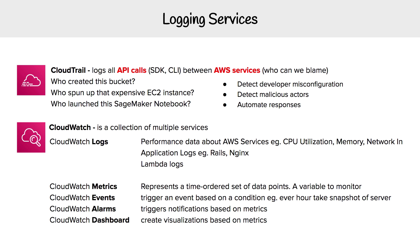Hey, this is Andrew Brown from ExamPro. We are looking at two logging services here: CloudTrail and CloudWatch. Starting with CloudTrail, it logs all API calls generally via the SDK or AWS CLI between AWS services. This is a really good service to determine who to blame for something.